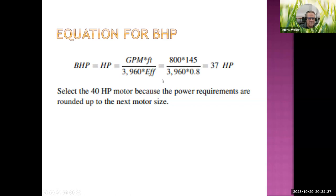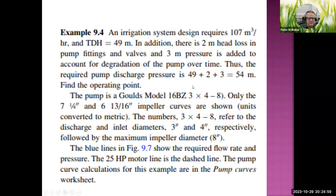The brake horsepower equation in Imperial units is: BHP = (gallons per minute × feet of head) / (3960 × efficiency). For the previous example: 800 gpm × 145 feet / (3960 × 0.80 efficiency) = 37 horsepower.